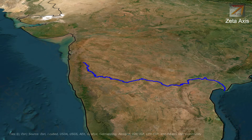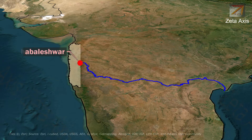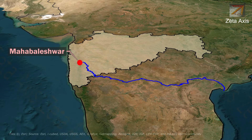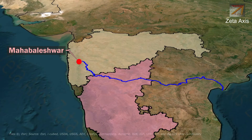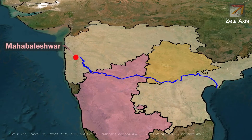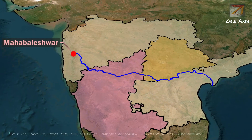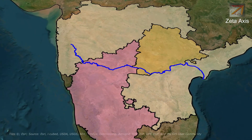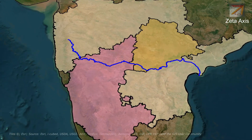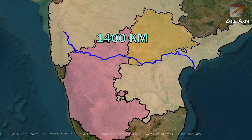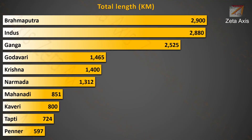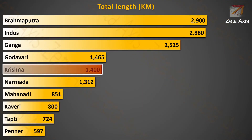The Krishna River originates in Mahabaleswar in Maharashtra. It flows through Karnataka, Telangana and Andhra Pradesh before flowing into the Bay of Bengal. The Krishna River's total length is 1400 km, making it the 5th longest river flowing through India.